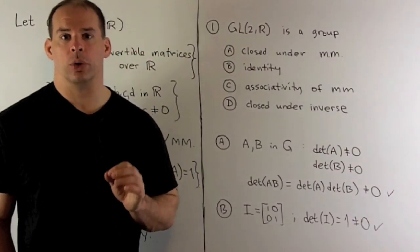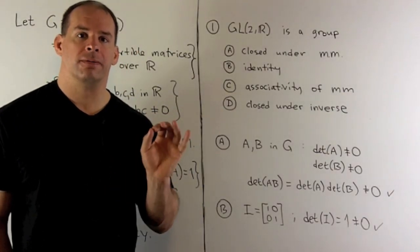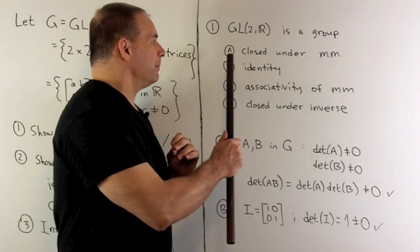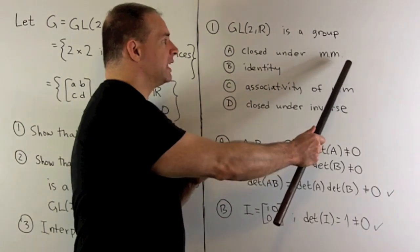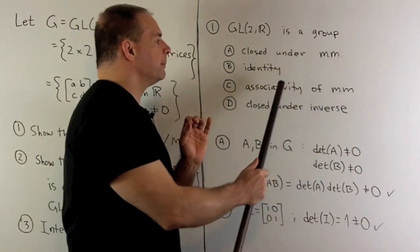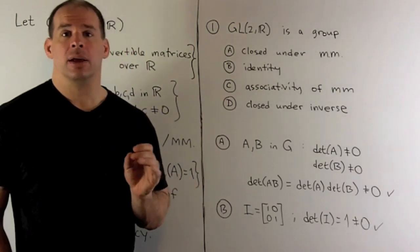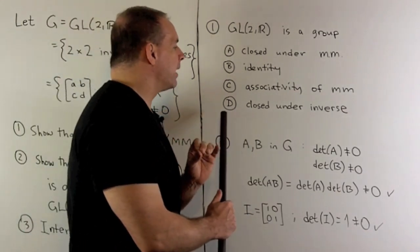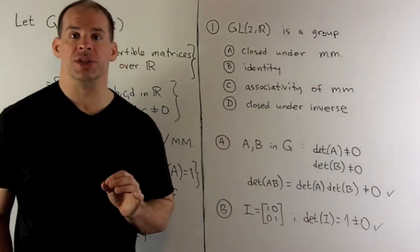To show that G is a group, we'll need to show four items. We'll need that G is closed under matrix multiplication, that there's an identity element in G, that matrix multiplication is associative, and that we're closed under taking inverses.